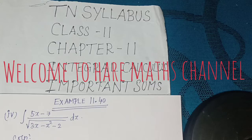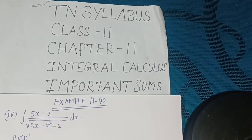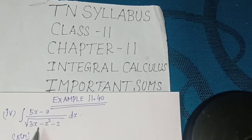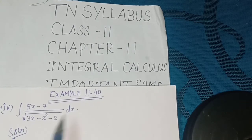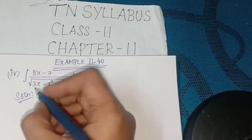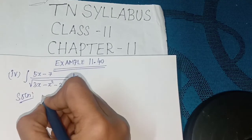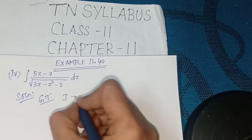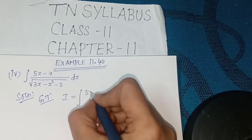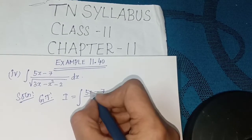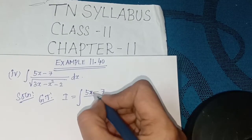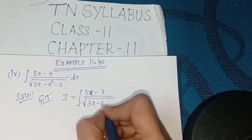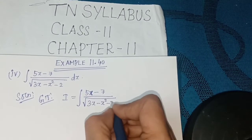Example 11.40, 4th subdivision. Find the integral of (5x minus 7) divided by the square root of (3x minus x squared minus 2), dx.